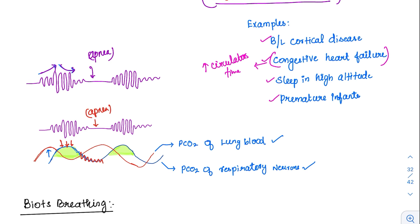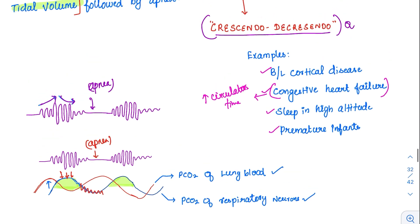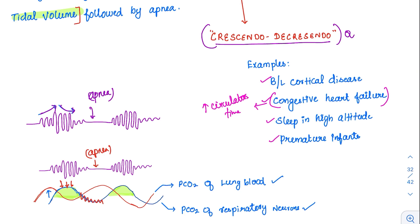And again, it will reach the brain a little later. This cycle keeps on repeating itself, giving rise to the crescendo-decrescendo pattern in case of Cheyne-Stokes breathing.